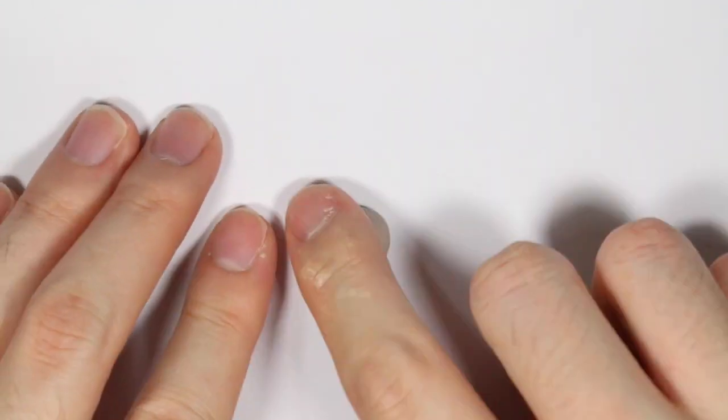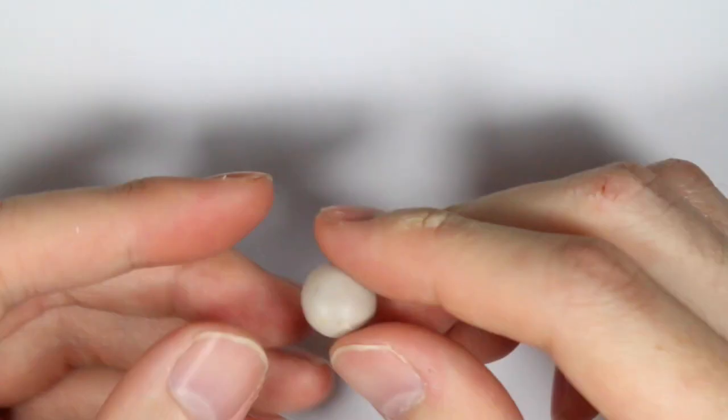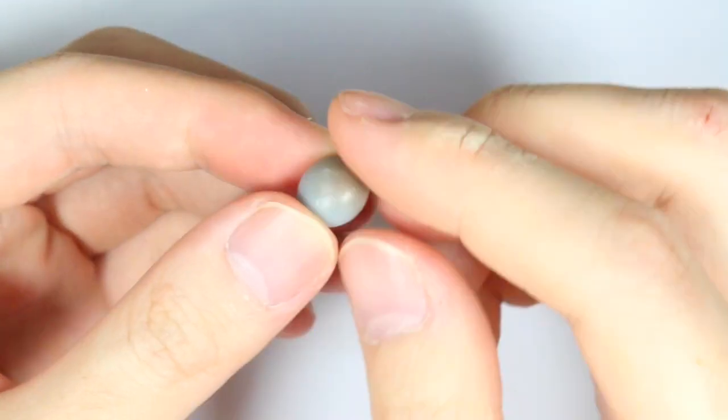So to make the raindrop part, I'm taking some scrap clay to make a mold and I'm shaping it into a dome shape and baking that according to instructions.